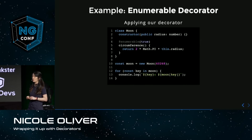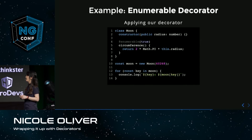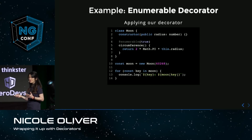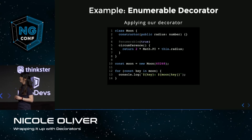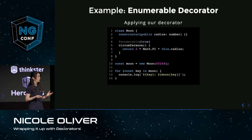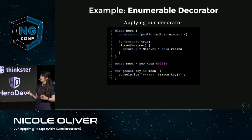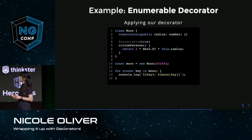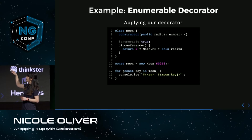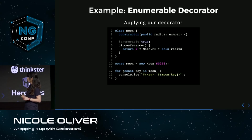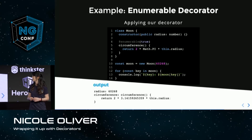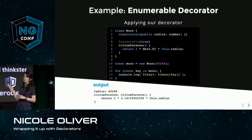To test this code, we use our moon class again. Assuming an ES2016 compile target where methods are not enumerable by default, doing a for-in loop without the enumerable decorator would only show the radius. But if we use the enumerable decorator and pass in true, then doing a for-in loop shows not only the radius but also the circumference method.